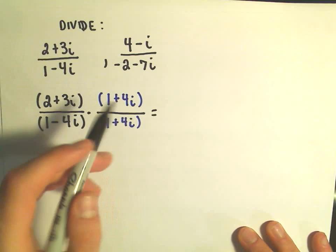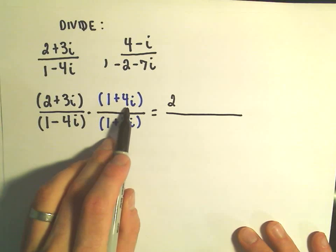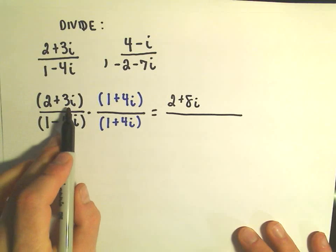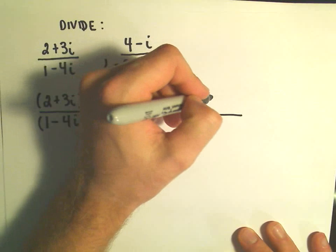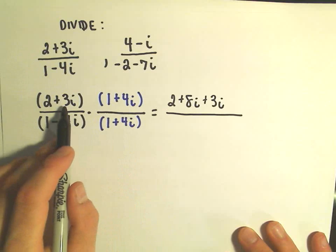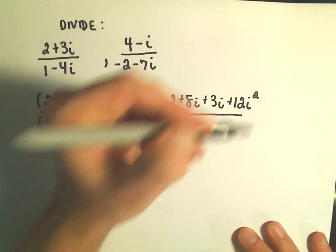So we've got 2 times 1, which is going to give us a positive 2. We have 2 times 4i, which is going to give us a positive 8i. We have 3i times 1, which is going to give us a positive 3i. And then we have 3i times 4i. So positive 3 and positive 4 is positive 12. And then we have our i squared.